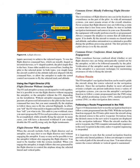To use the Flight Director command bars — which are usually shaped as inverted chevrons or V-shaped symbols — the pilot simply flies to the bars. Some older models use crossed bars, leading the pilot to the selected point. In both types, you simply keep the aircraft symbol on the attitude indicator aligned with the command bars, or allow the autopilot to make the actual control movements to fly the selected track and altitude.